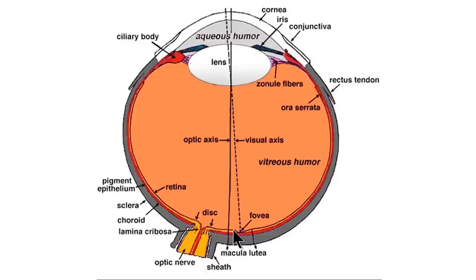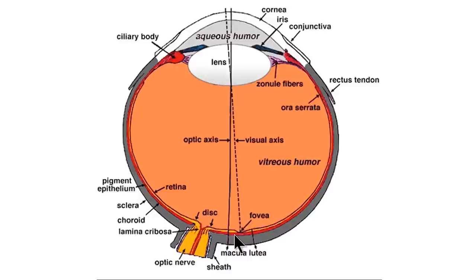Think of the foveal region for cones — high acuity, color vision — and the peripheral region for rods — low acuity, low light, and dispersed light. The area on either side of the fovea is called the macula lutea: macula means spot, and lutea means yellow. However, when you look at it through the ophthalmoscope it really doesn't look very yellow.